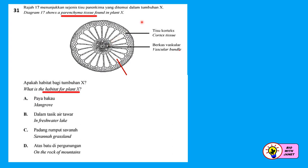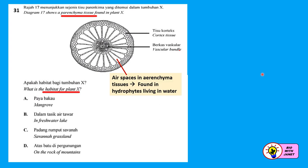Question 31: Diagram 17 shows parenchyma tissue from plant X. The tissue has a lot of air spaces, which is a clear sign that this is aerenchyma tissue found in hydrophytes that live in water. Aerenchyma tissue contains air spaces to help the plant become lighter so it can float on water. The answer is B: the habitat is a freshwater lake.